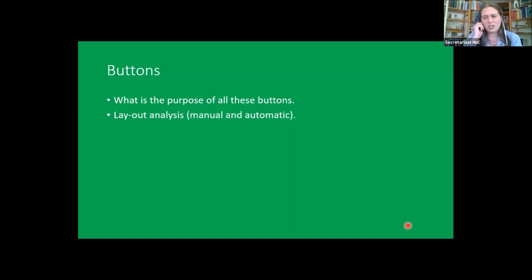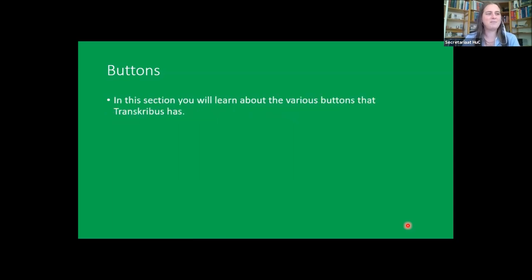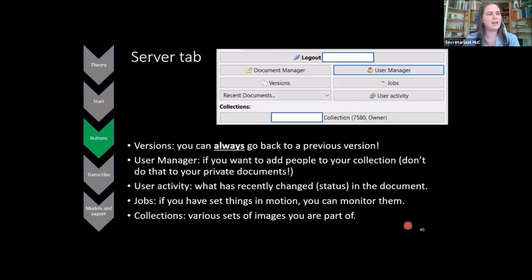Now we're going to go through the buttons — probably the most boring part, but also the most important. After I explain the buttons and layout analysis, we'll have a short break. Download the slides afterwards so you can revisit this section if you get confused. I'll show you where we are — the orange box — which is the Server tab. Here you can go back to previous versions of your documents, so nothing is ever lost; you just save a new version. If your cat happened to hit the wrong button, just click 'Versions' and go back.